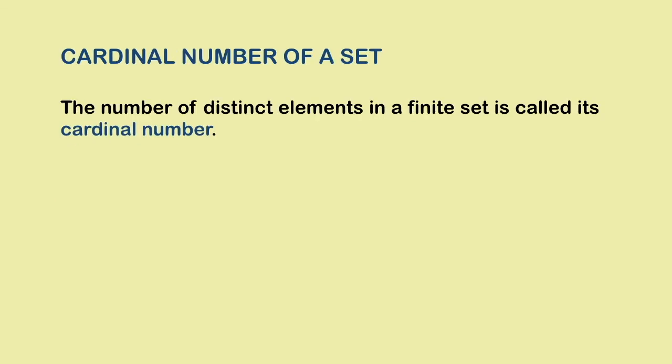Now before we move ahead, let me introduce to you the concept of cardinality or cardinal number of a set. The number of distinct elements in a finite set is known as the cardinal number of the set. We denote it using either of the two ways that you can see here. It is read as the number of elements of the set A.